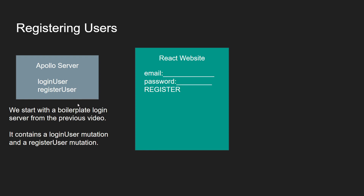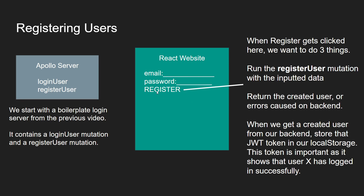Let's look at registering users. We start with the Apollo Server that contains a login user mutation and a register user mutation. Our React website is going to have an email input and a password input. When we press the register button, we want to run the register user mutation with the inputted data. It will return the created user or errors from the backend — for example, someone already registered with a certain email. When we get a created user back, we want to store that JSON web token in local storage.